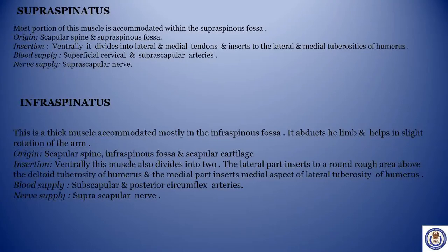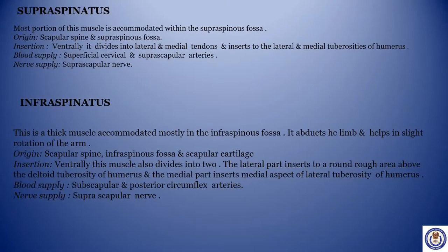Infraspinatus: this is a thick muscle accommodated mostly in the infraspinous fossa. It abducts the limb and helps in slight rotation of the arm. Origin: scapular spine, infraspinous fossa and scapular cartilage. Insertion: ventrally the muscle divides into two — the lateral part inserts to a round rough area above the deltoid tuberosity of humerus, and the medial part inserts to the medial aspect of the lateral tuberosity of humerus. Blood supply: subscapular and posterior circumflex arteries. Nerve supply: suprascapular nerve.